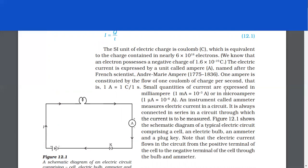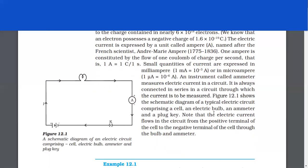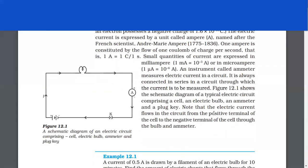Small quantities of current are expressed in milliampere or in microampere. An instrument called ammeter measures electric current in a circuit. It is always connected in series in a circuit through which the current is to be measured. Figure 12.1 shows the schematic diagram of a typical electric circuit comprising a cell, an electric bulb, an ammeter and a plug key. Note that the electric current flows in the circuit from the positive terminal of the cell to the negative terminal of the cell through the bulb and ammeter.